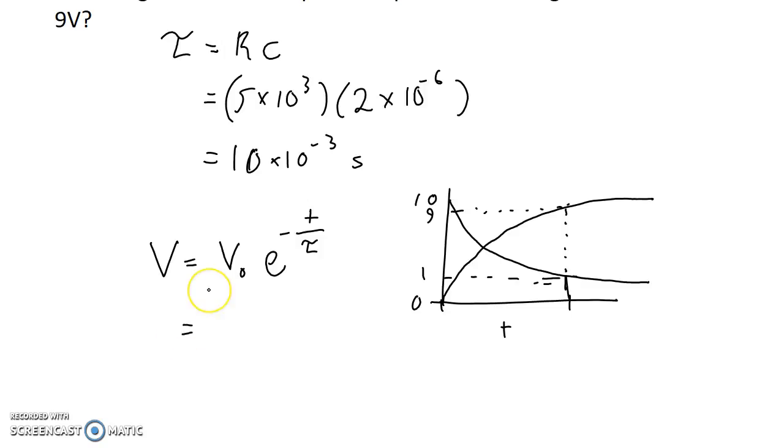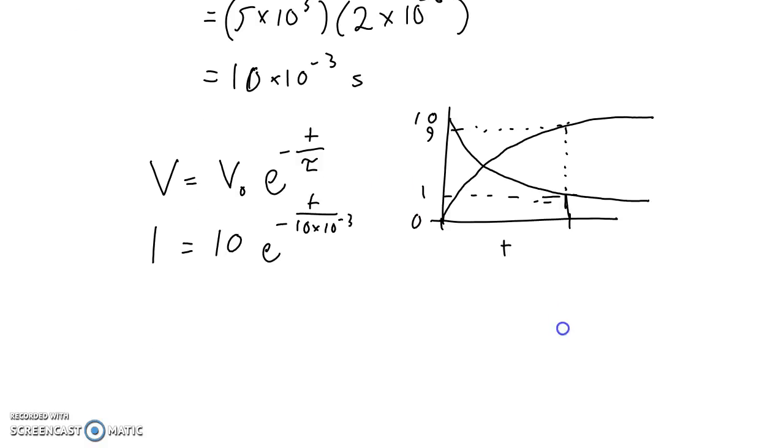So we'll say that in an identical system, if we discharge from 10 volts down to 1 volt, how much time is that going to take? Our time constant is 10 times 10 to the negative 3 seconds. And what we have now is an equation in one variable, so we just need to rearrange to solve. We'll divide both sides by 10, and we'll get 0.1 equals e to the negative t over 10 times 10 to the negative 3.